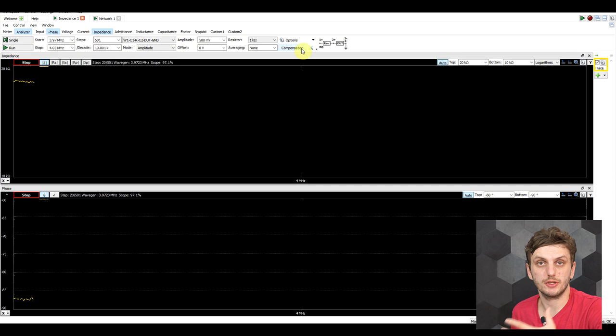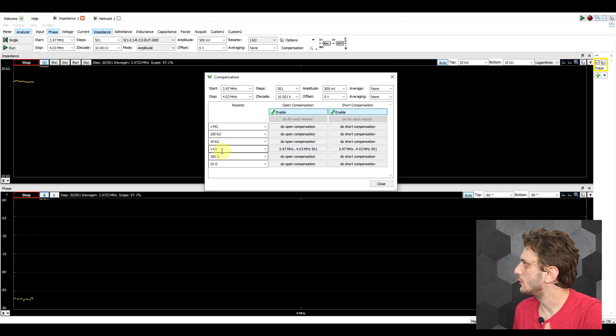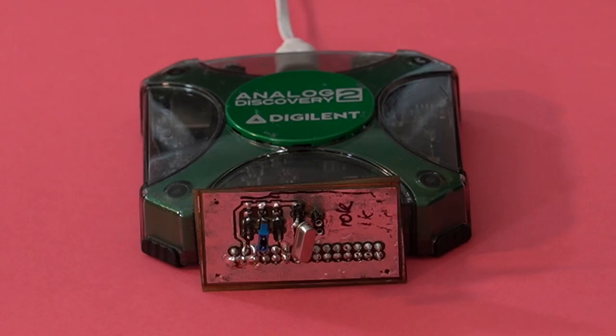Now as with any network analyzer, the first thing to do before you start your measurement is to run a calibration run, so a compensation in which you compensate for an open circuit and for a short circuit, so that the device knows exactly what sort of load the test fixture is providing, which can then be subtracted from the actual measurement.